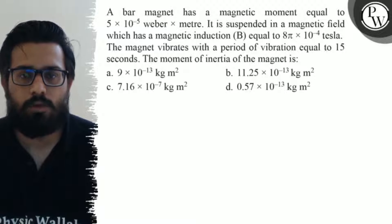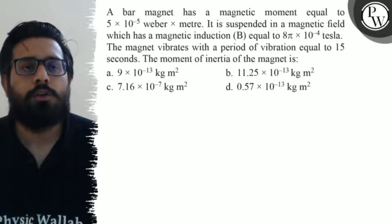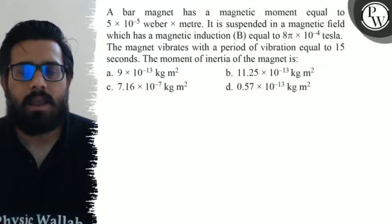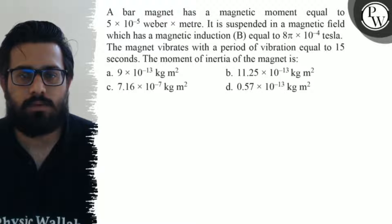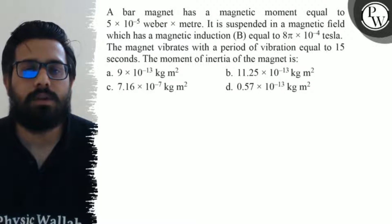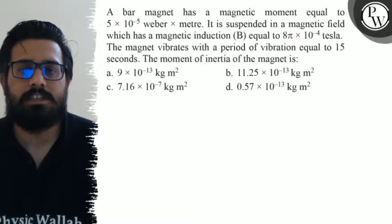The third option says 7.16 × 10^-7 kg·m². And your fourth option says 0.57 × 10^-13 kg·m².